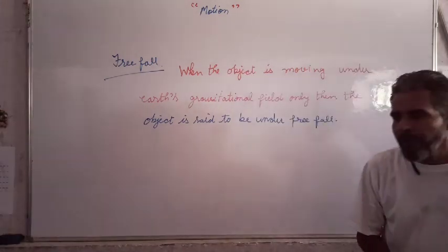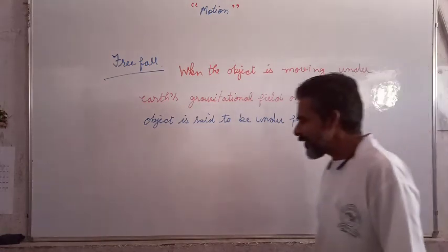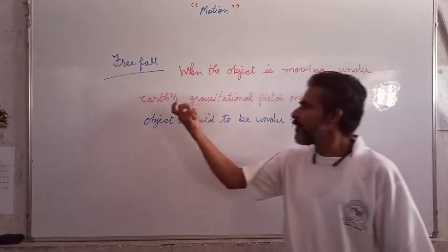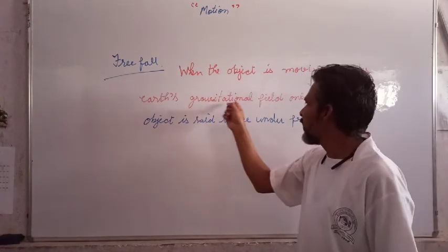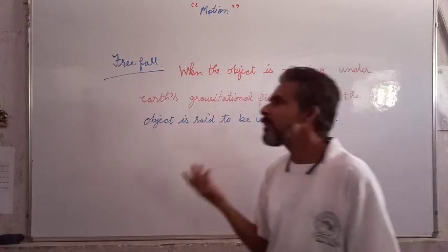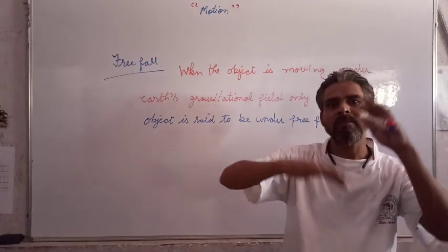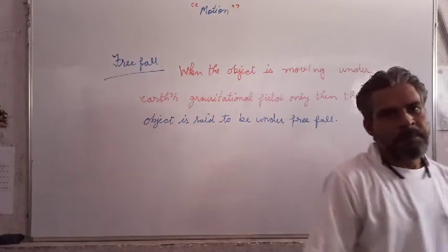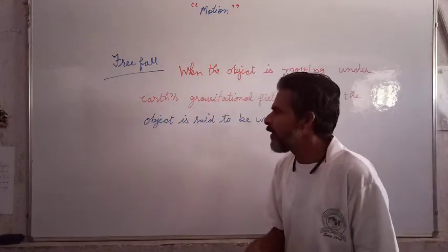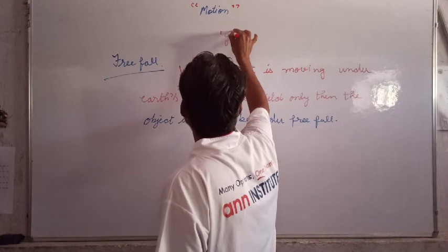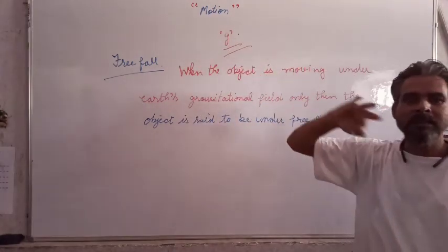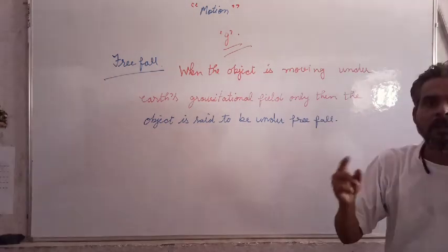Then the object is said to be under free fall. Now, for this kind of motion, an object is moving under Earth's gravitational field. Earth applies a force, and that force will accelerate the object. You may have heard regarding small g. Yesterday I told you about acceleration.